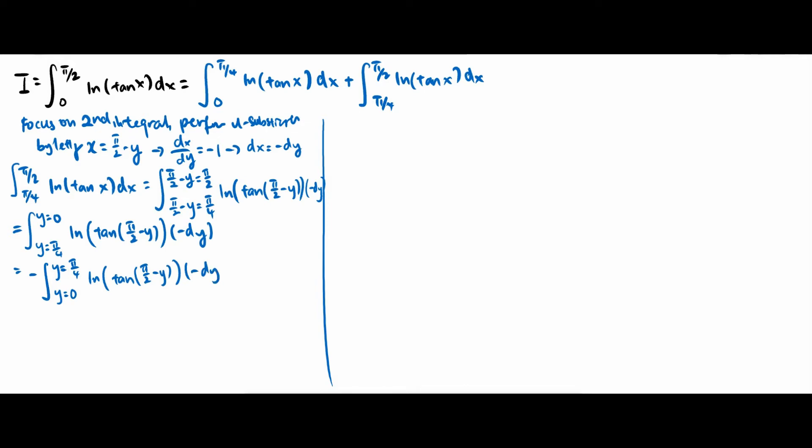We now have two negative signs multiplying each other, which equals a positive sign, and hence we have this simplified equation.